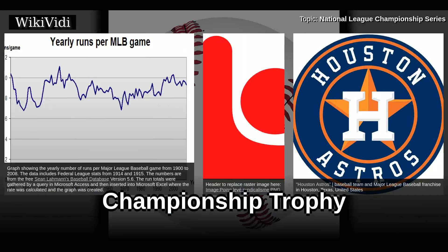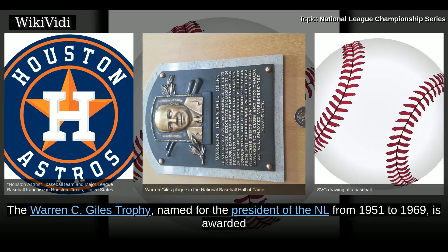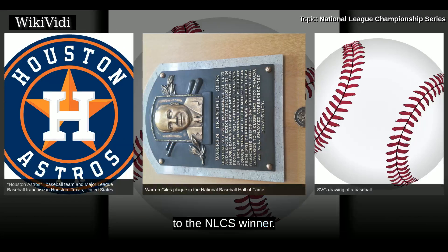Championship Trophy. The Warren C. Giles Trophy, named for the president of the NL from 1951 to 1969, is awarded to the NLCS winner.